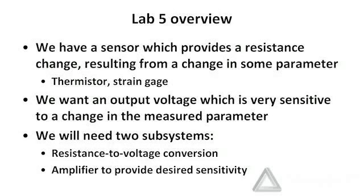A quick overview of the overall system: we have a sensor which provides a resistance change resulting from a change in some parameter. For example, for a temperature measurement system we'll use a thermistor, and for our strain measurement system we'll use a strain gauge to convert deflection into a resistance value. What we want out of this is an output voltage which is very sensitive relative to changes in the measured parameter.